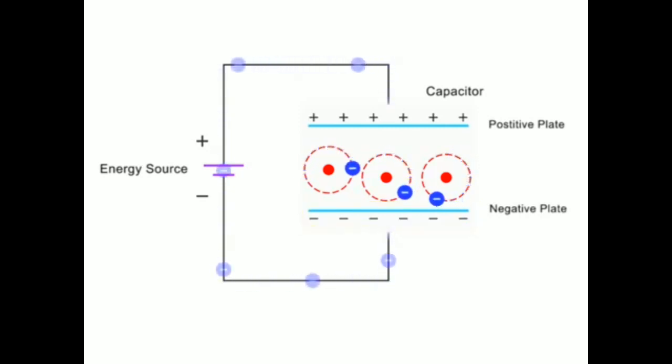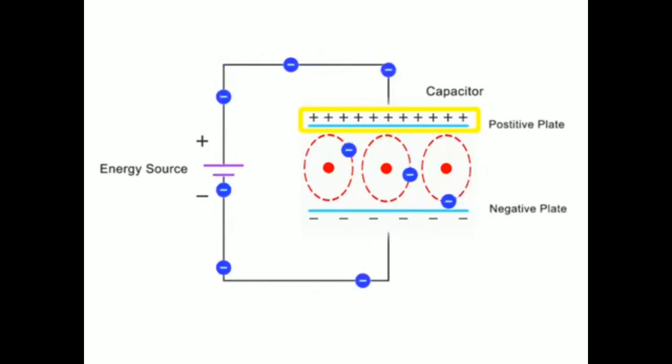As charge accumulates on the positive plate, the electrons of the dielectric material gravitate toward the positive plate, distorting their orbits.